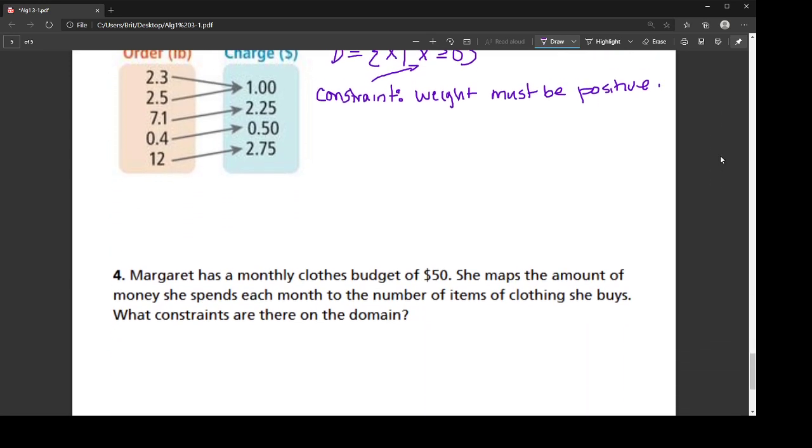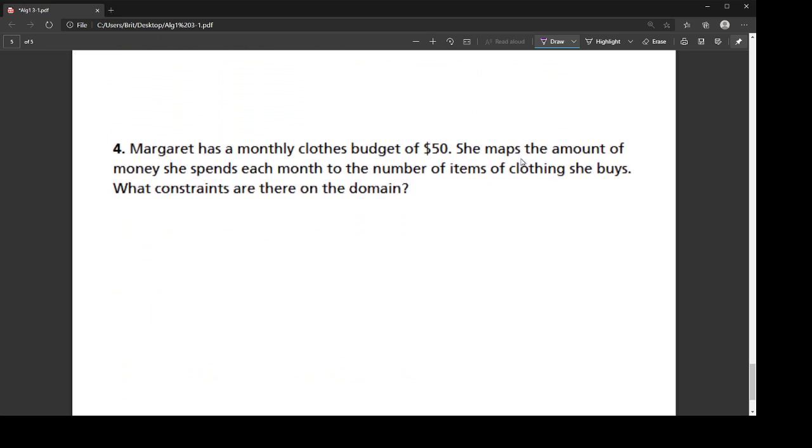Let's look at this one. There's a gal named Margaret, and she has a monthly clothes budget of $50. She's mapping the amount of money she spends each month to the total number of items that she buys. What are the constraints on the domain?